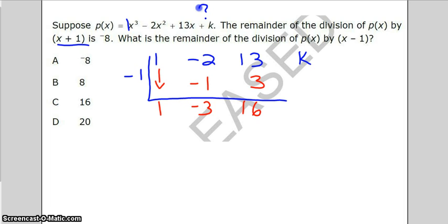Negative 1 times 16 is negative 16. Now the remainder, we are told, is negative 8. So something minus 16 is negative 8. That means that k has to equal 8, because 8 minus 16 is negative 8.